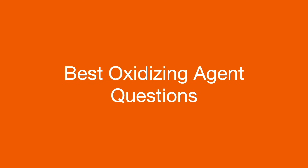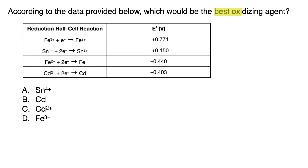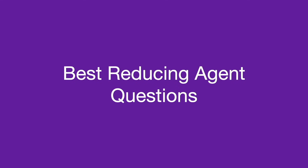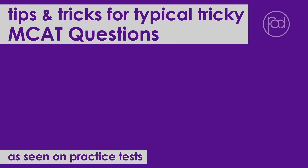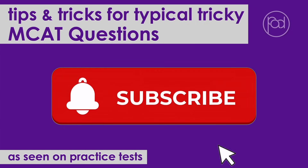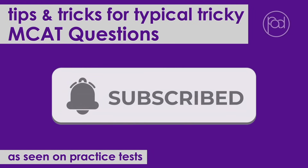For best oxidizing agent questions when given reduction half-cells, it does more simply come down to choosing the left-side ion or atom in the most positive E value cell. Before you go, we have more MCAT tips and tricks for high-yield, high-trouble questions as seen on practice tests — tips and tricks that will help you effortlessly get more correct on your tests. Subscribe and hit the notification bell so you can catch our 'don't think too much' tips and tricks as we post them. Thanks so much for watching!